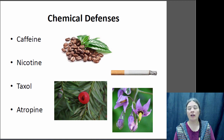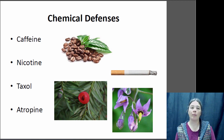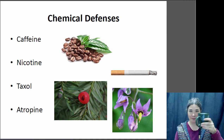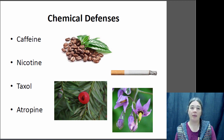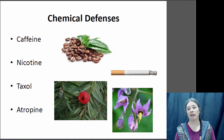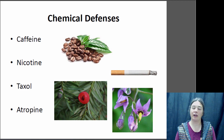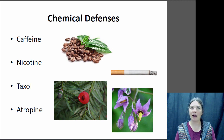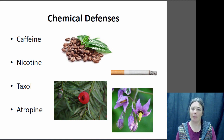A lot of plants also use chemical defenses — compounds they produce that deter herbivores. Some of those compounds we've found other uses for. Caffeine, for example, is a defensive compound that plants produce; it's a pesticide, toxic to insects. However, it has psychotropic effects on humans and acts as a stimulant. Similarly, nicotine is another insecticide, but it has a mildly euphoric effect on humans and can cause addiction — another compound we've co-opted for our own uses.